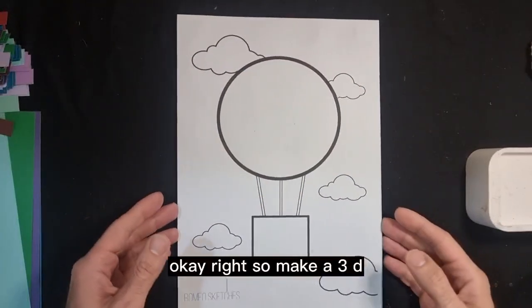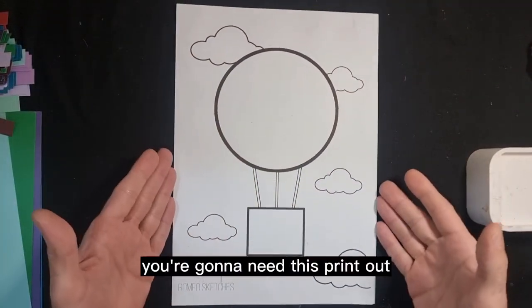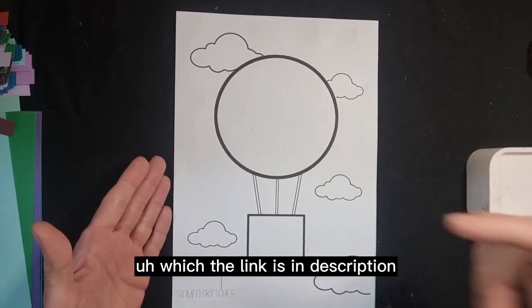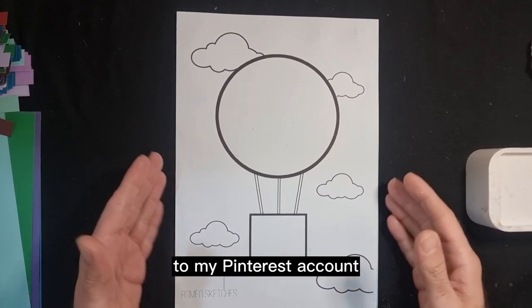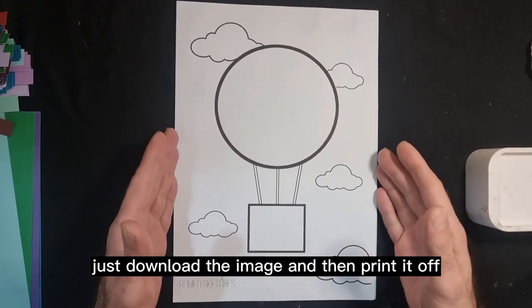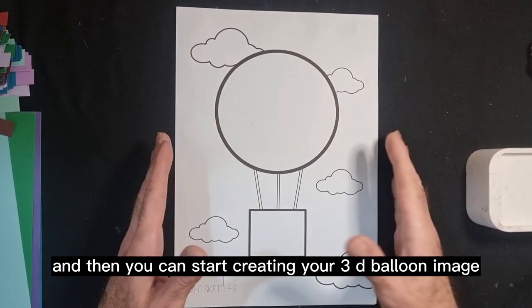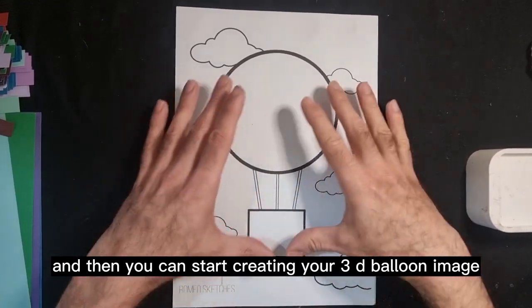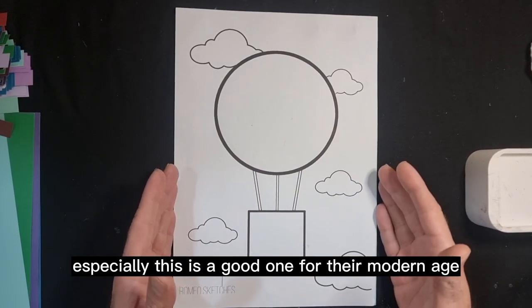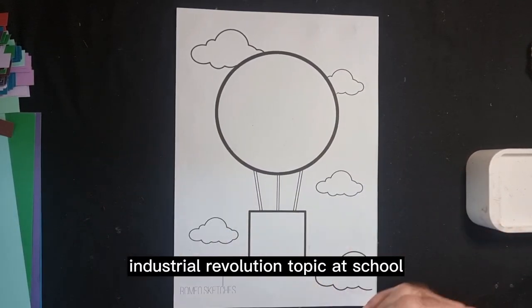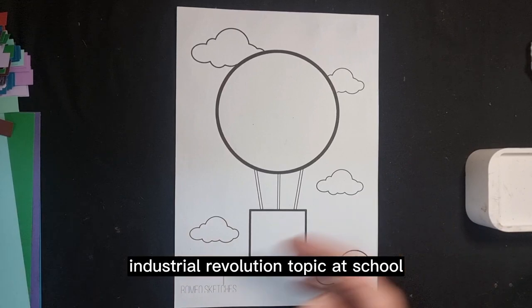Okay, right. So to make our 3D balloon picture, you're going to need this printout which the link is in description to my Pinterest account. Just download the image and then print it off, and then you can start creating your 3D balloon image. This is a good one for the modern age industrial revolution topic at school.